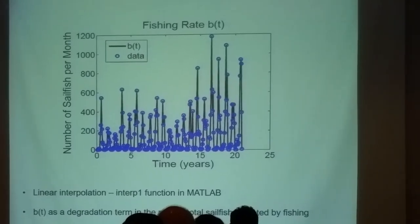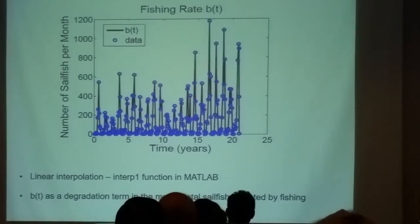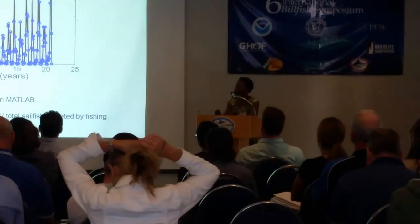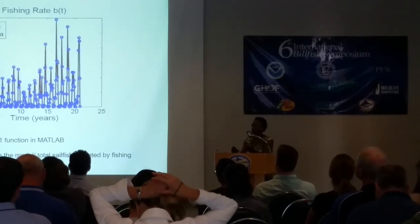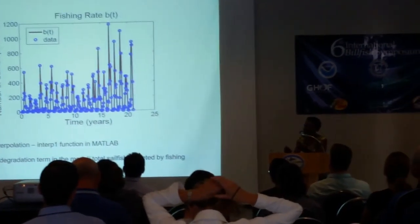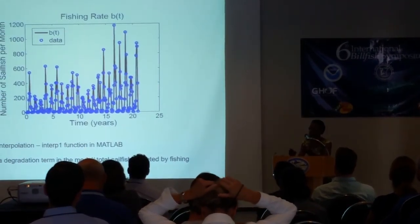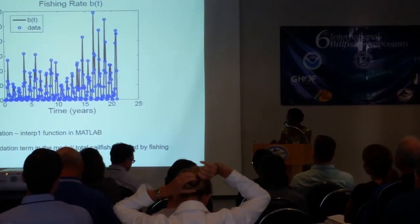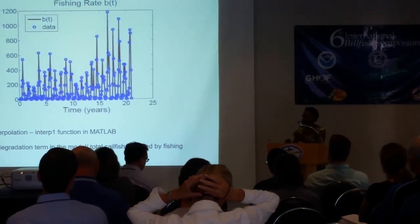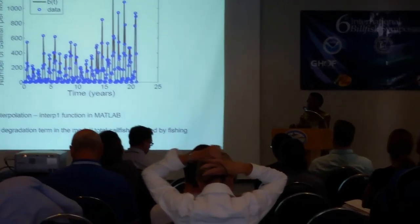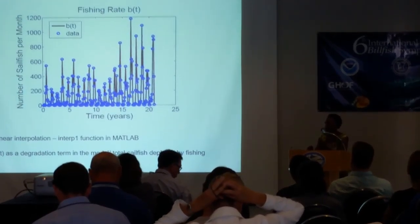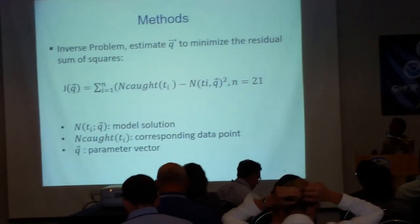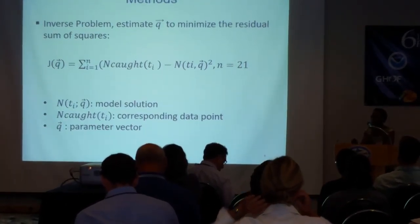We wanted to capture the dynamics in the data. One thing we noted is that the seasonality of fishing changed with the number of fishermen that were going out, and that helped us capture the fishing rate. We represented our fishing rate as a degradation term — in this case the number of sailfish caught on a monthly basis.